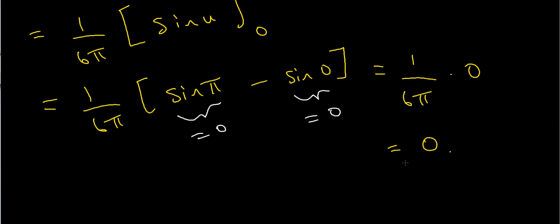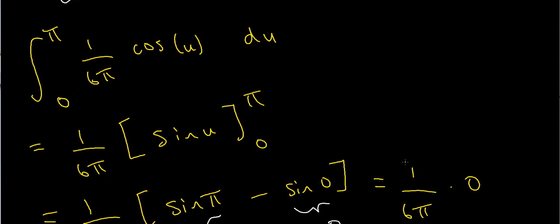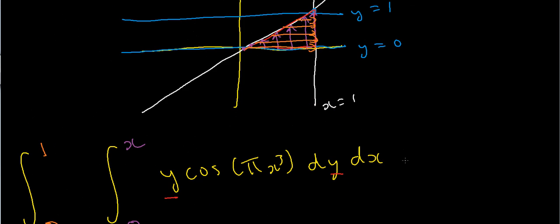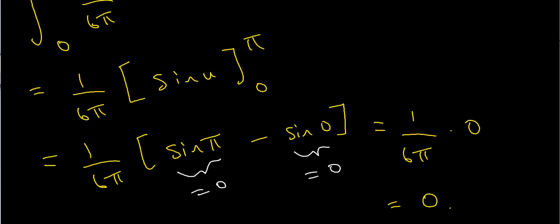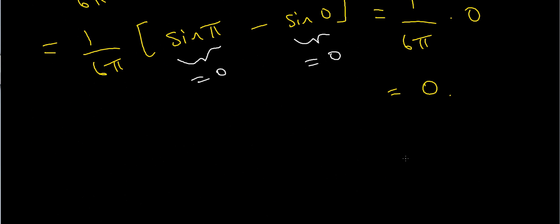So the value of my double integral after all this work of changing the order of integration is just 0. That's how you change the order of integration to do an example like this. If you like this video, make sure you leave a like, comment, and subscribe if you want to see more content just like this. Thanks for watching.